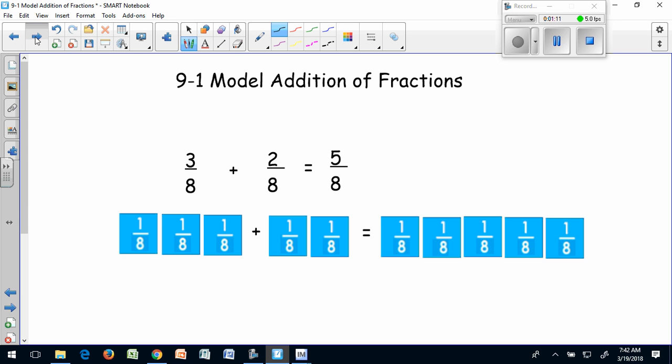Notice, my denominator never changed because I still have pieces that say eighths. All I did was add my numerators. Three eighths plus two eighths equals five eighths.